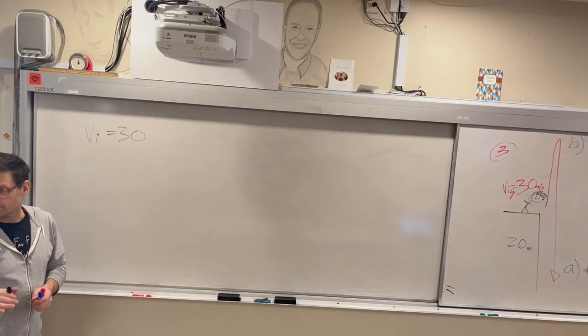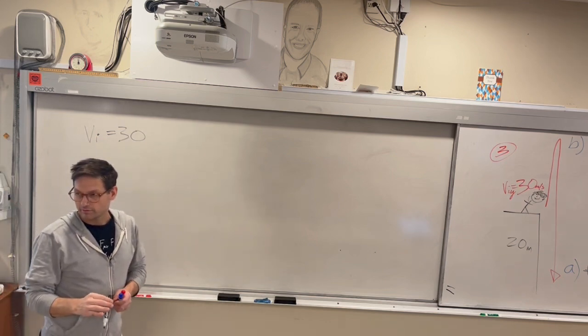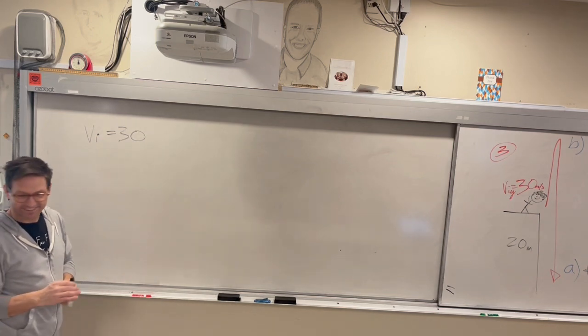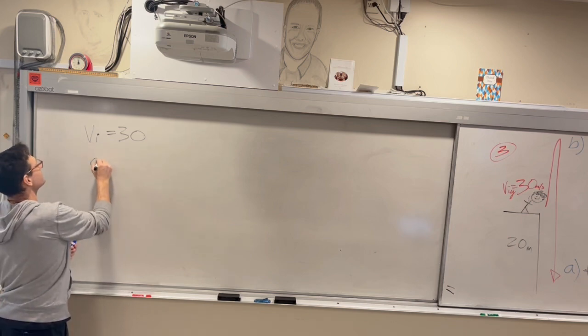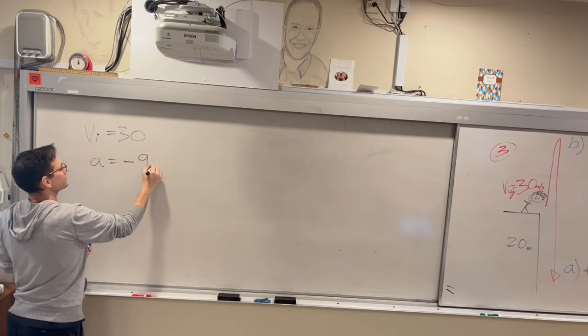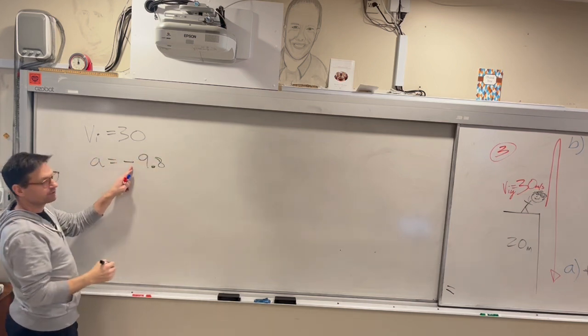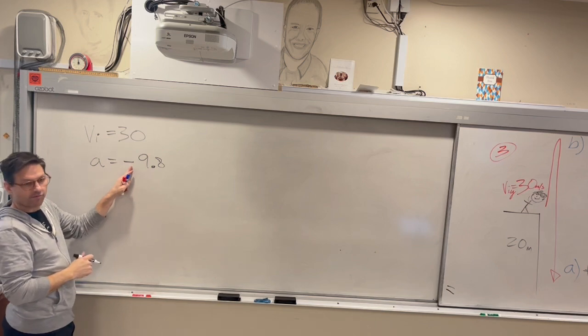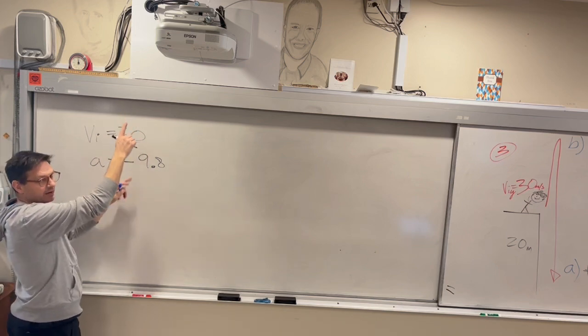Linus. Acceleration. Good. I've put negative. Why? Yeah, it's going down. This is positive. What else do we know?